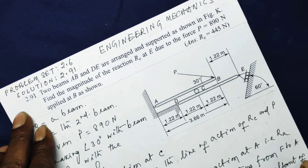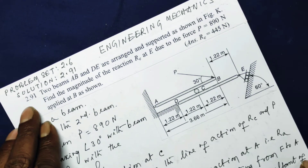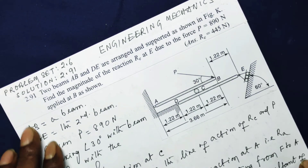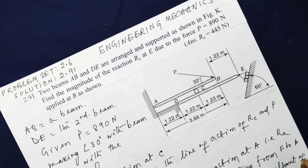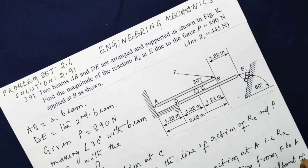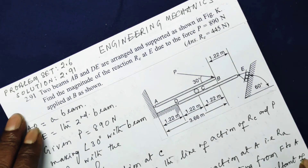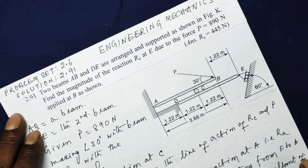This is the solution to engineering mechanics problem set 2.6, solution to problem 2.91. In section 2.6, we have been using the principle of moment of a force: if there is a force and you want to find its turning effect about a point, the moment is the product of the force and the perpendicular distance from the point.